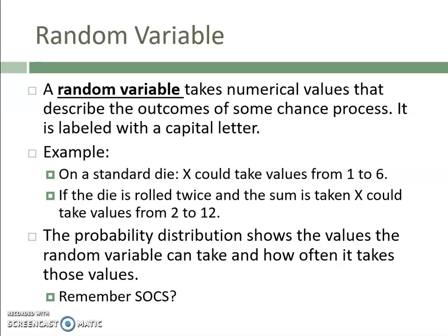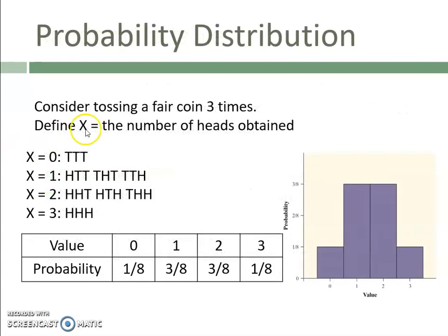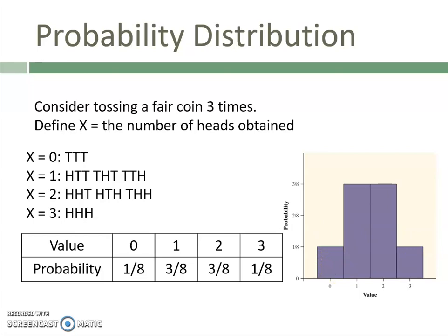If the die is rolled twice and the sum is taken, X could then represent the values 2 through 12, because those are the possible sums when you roll 2 dice. Now a probability distribution shows the values that the random variable can take and how often it takes those values. When we look at a probability distribution, it can be shown both in a table as well as in a graph form.